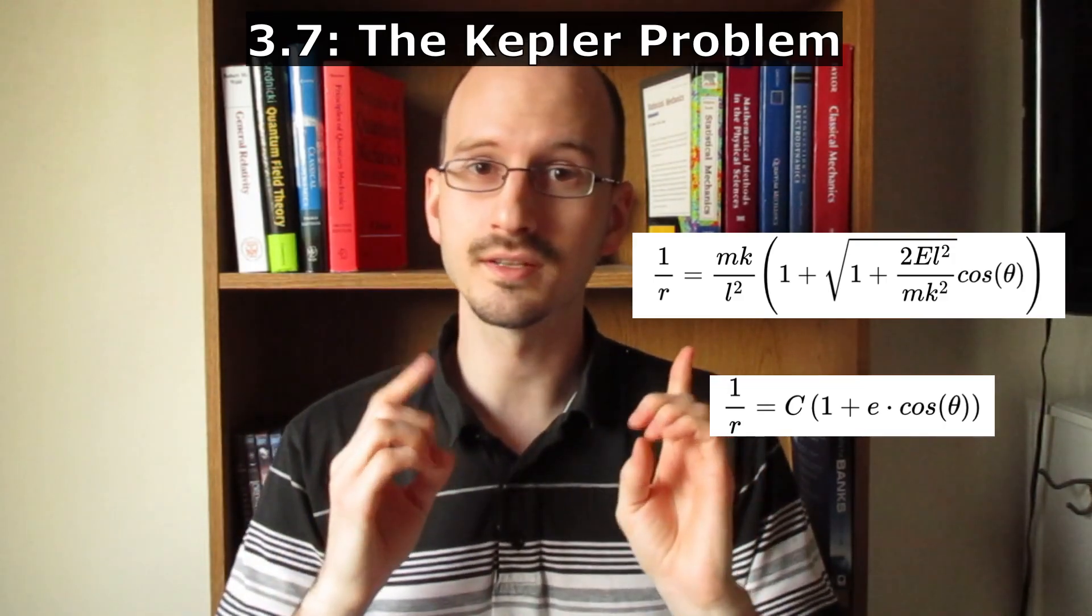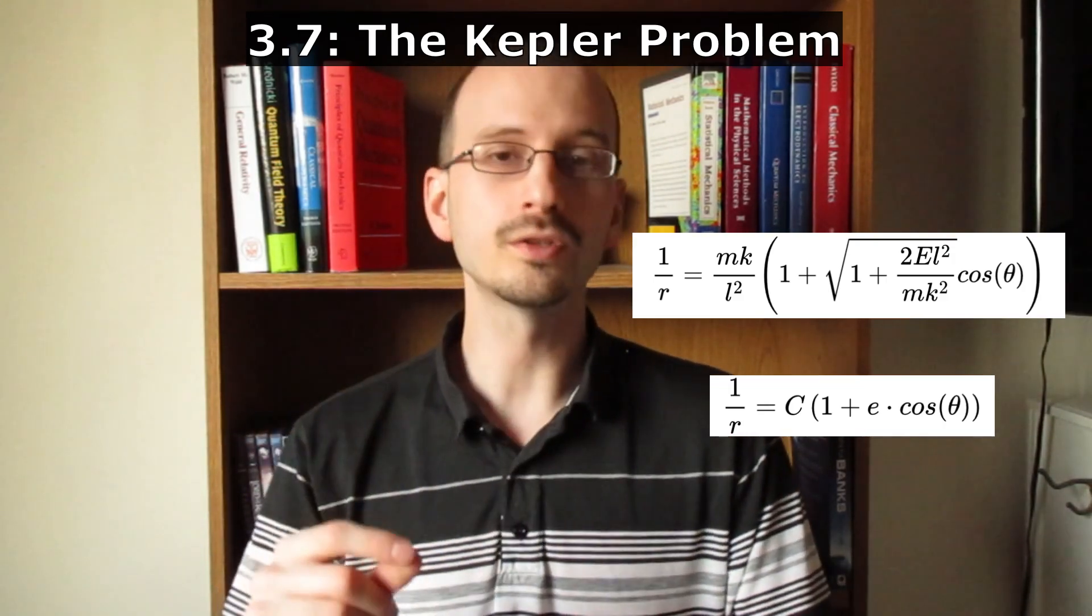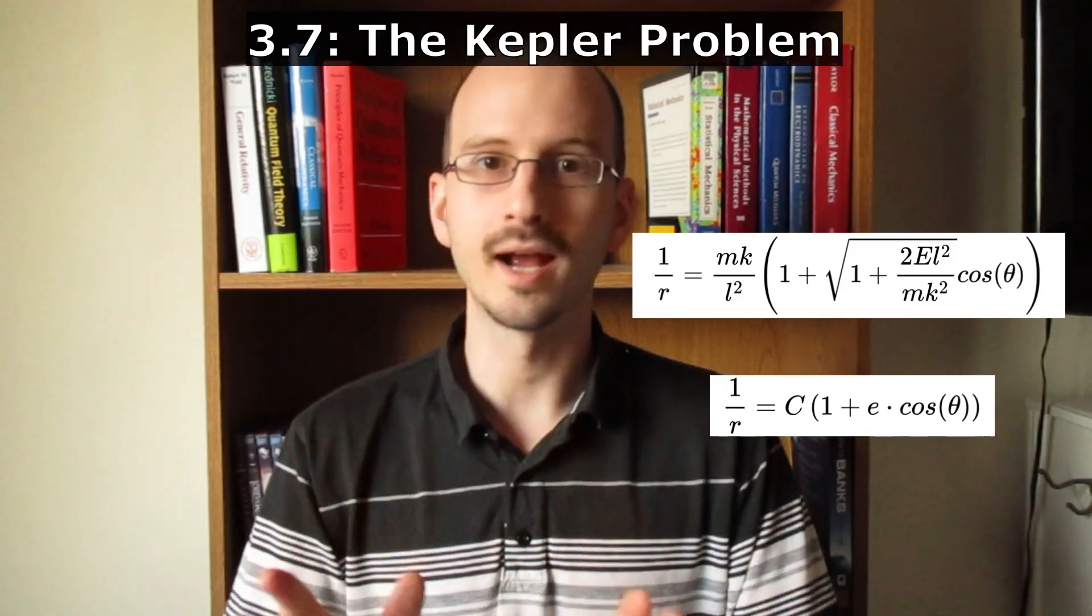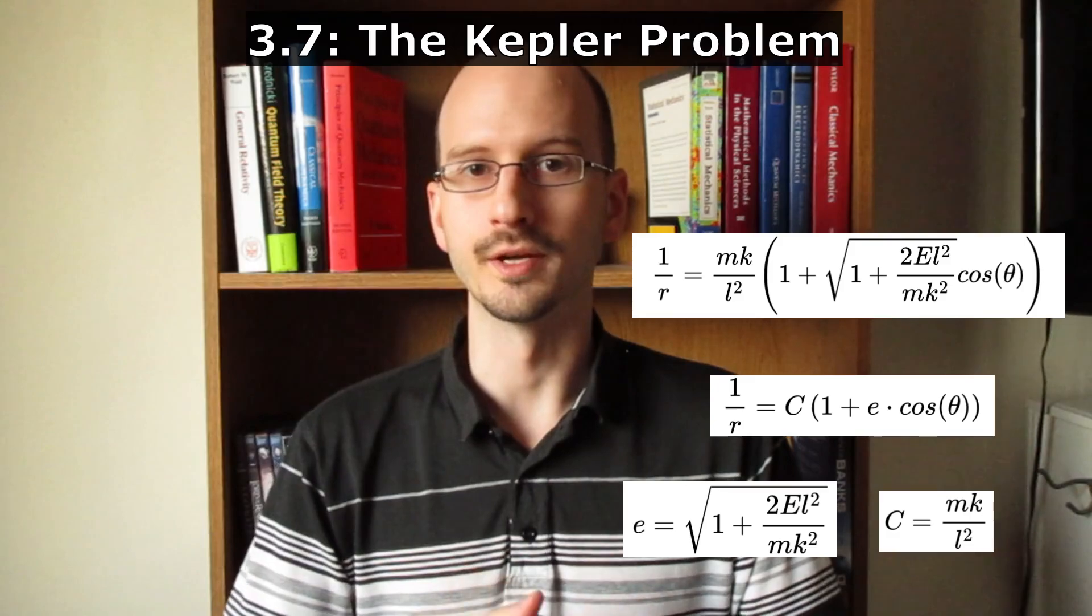If you put the right values into this equation, you can get circles, ellipses, parabolas, or hyperbolas. In this general conic section equation, E is the eccentricity, and C is a scaling constant.